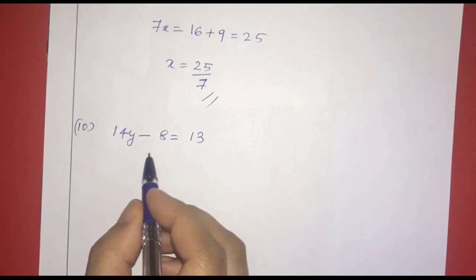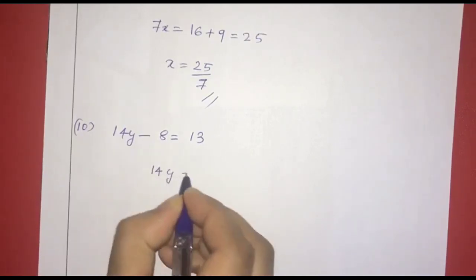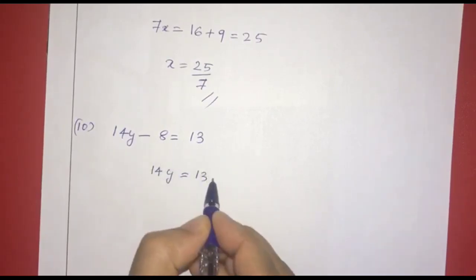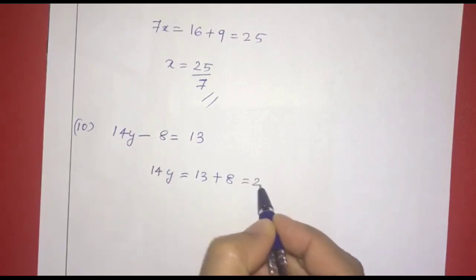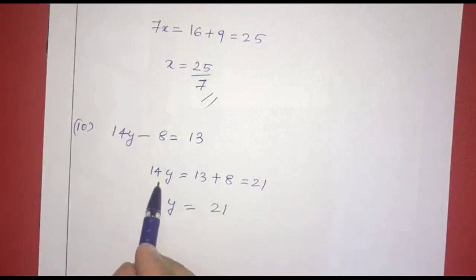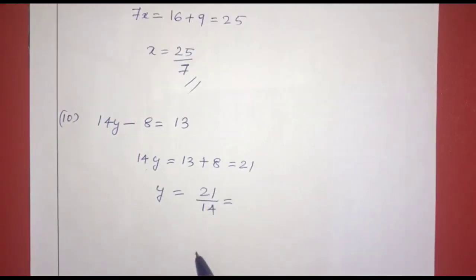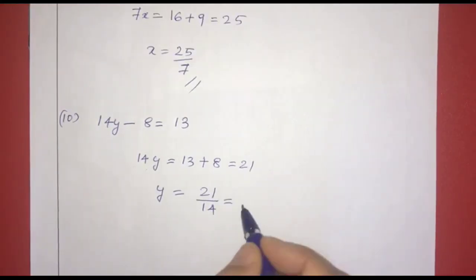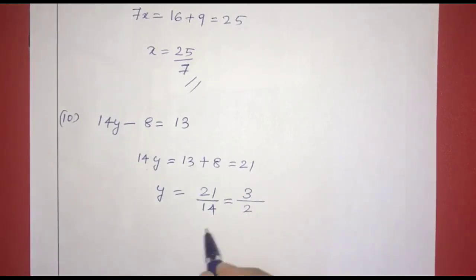Next: 14y minus 8 equals 13. So 14y equals 13 plus 8 equals 21. Therefore y equals 21 divided by 14. Simplifying by dividing numerator and denominator by 7, we get y equals 3 by 2.